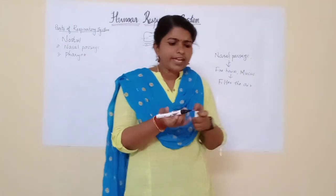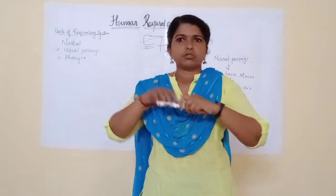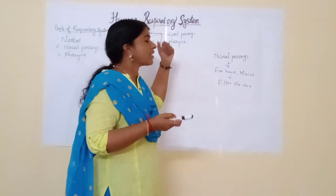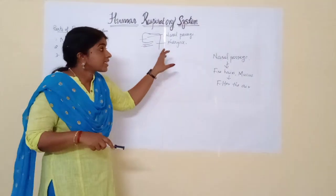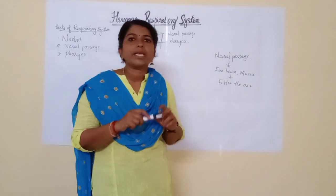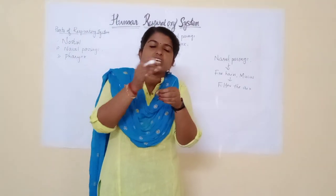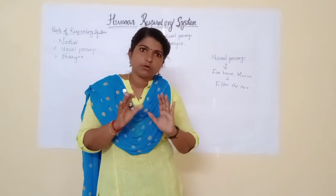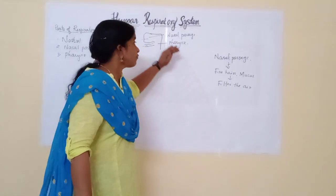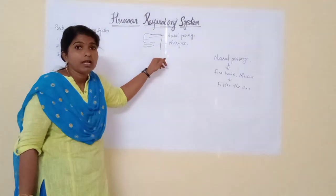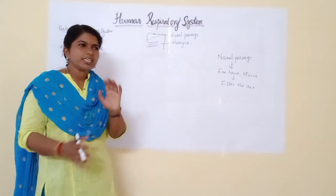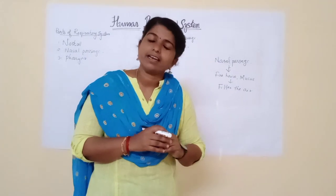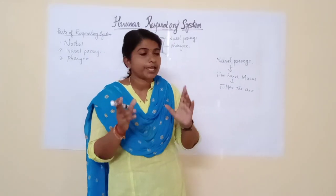Now you will think: why does food normally not enter into the trachea? There is a structure called the epiglottis, which covers the trachea while swallowing food. So in normal cases, food will not enter into the windpipe. That is why it is normally said not to talk or laugh while eating food.